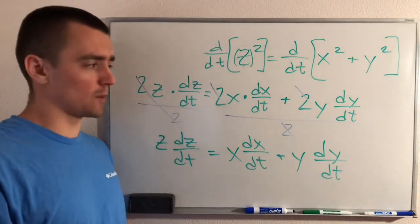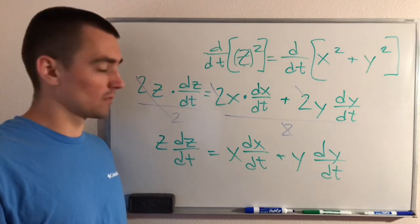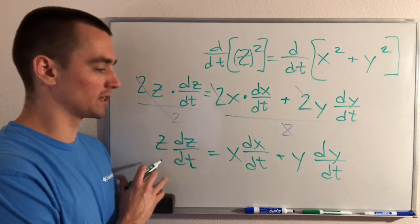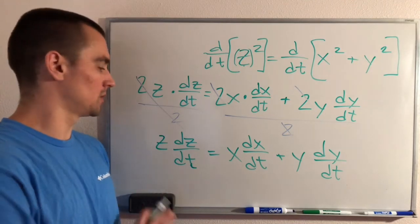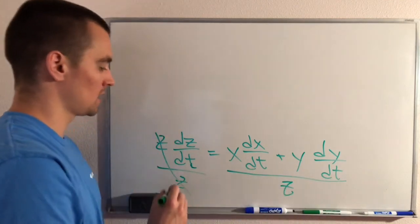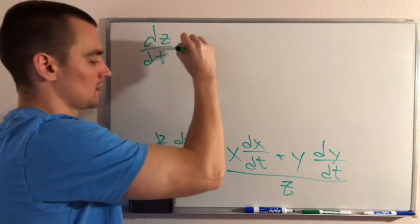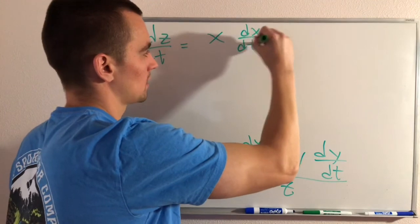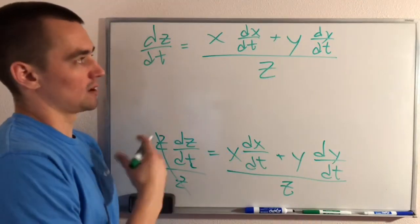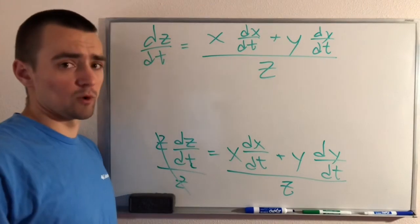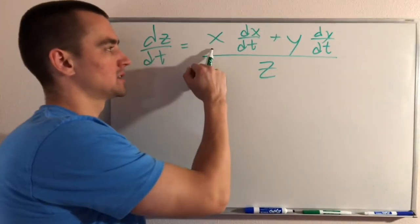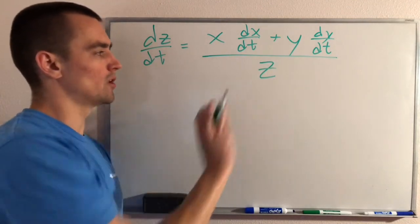Now we can move on to our final step: solving for the desired rate of change. We're looking for dZ/dt, so we divide both sides by Z to isolate it, giving us: dZ/dt = [X·(dX/dt) + Y·(dY/dt)] / Z. We know X, dX/dt, Y, and dY/dt, but we still need to find Z.